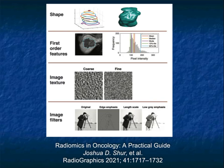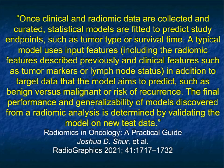We talk about shape, first order features including mean, median, and mode, and image texture — something I spent a lot of time speaking about with cinematic rendering. We also talk about all sorts of filters that can be applied to data. There is almost an infinite number of filters that can be used; the question is what filters will help us better recognize disease and better understand what we're looking at.